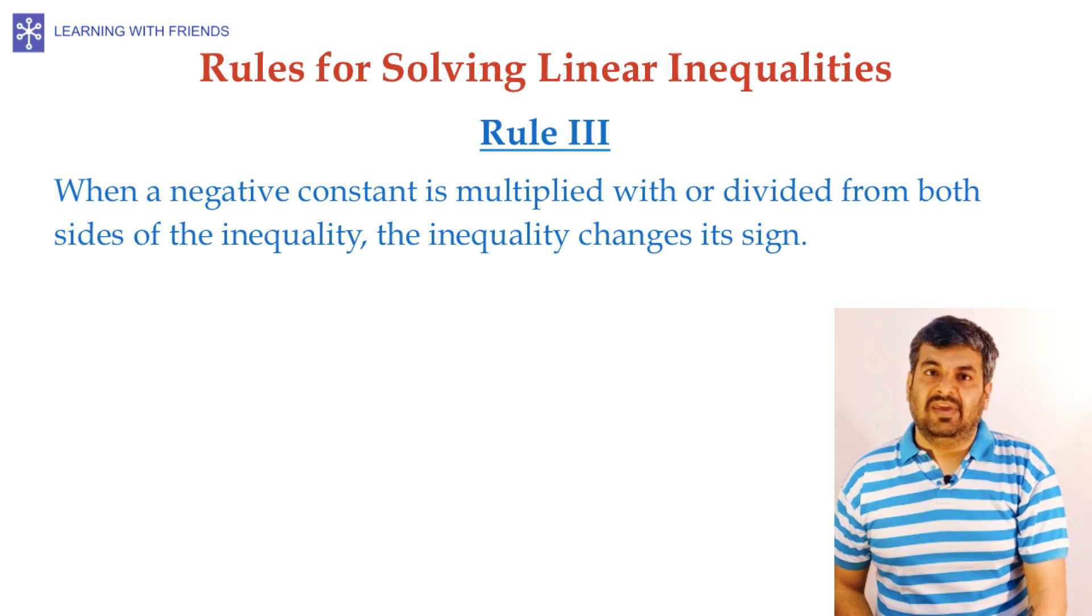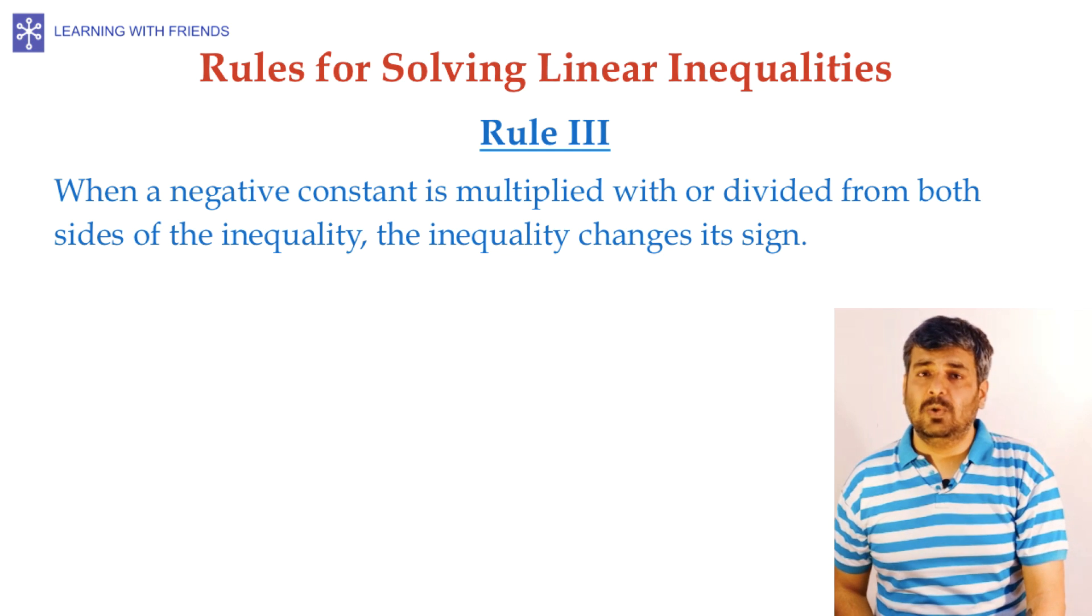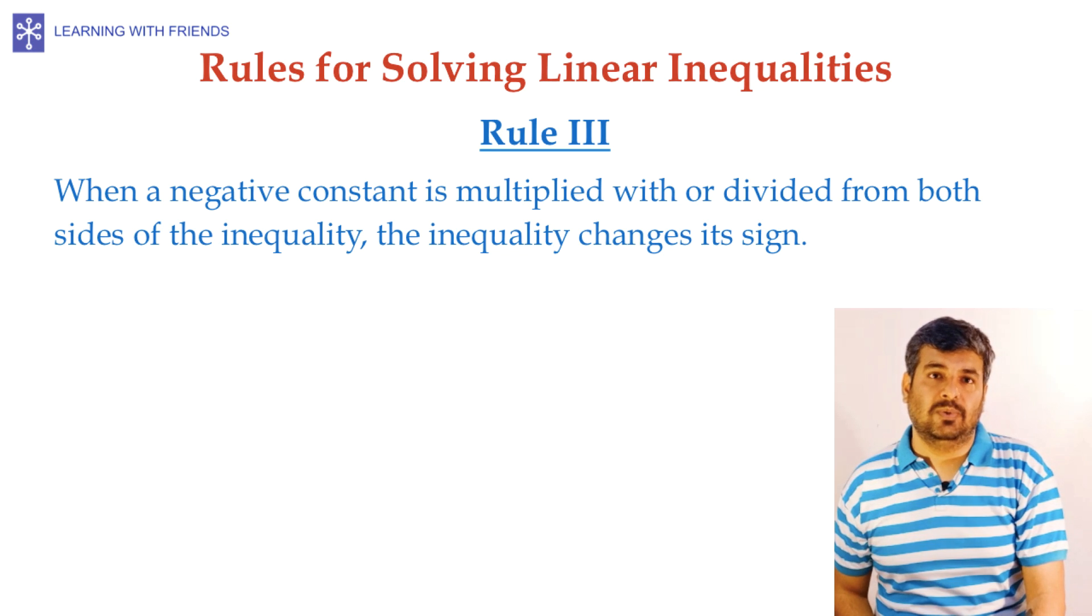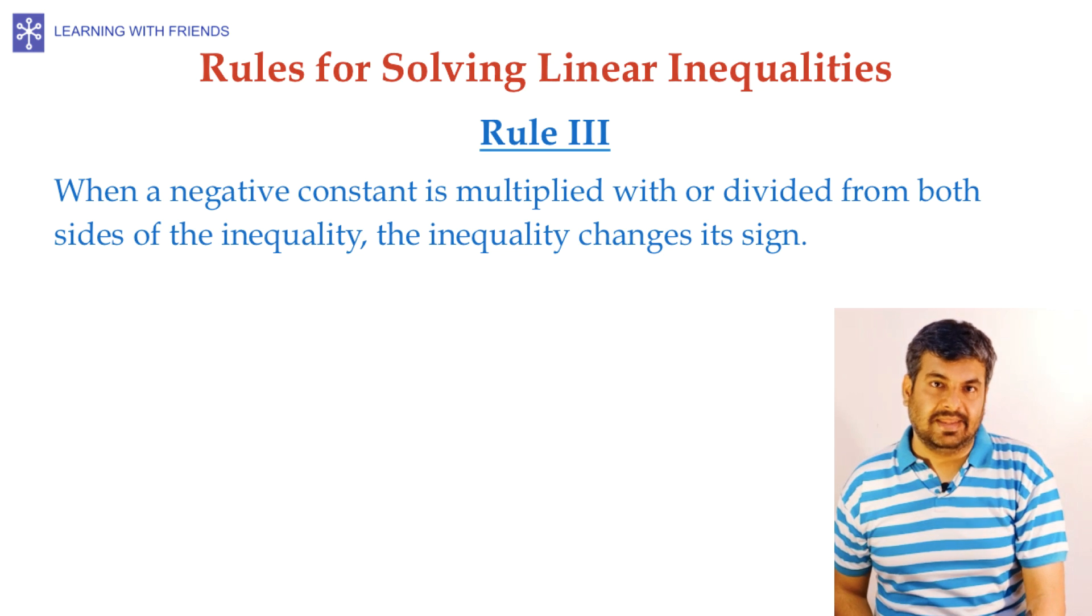However, what happens when we have to divide or multiply a negative constant? That brings us to rule 3. When a negative constant is multiplied with or divided from both sides of the inequality, the inequality changes its sign. What do we mean by that?